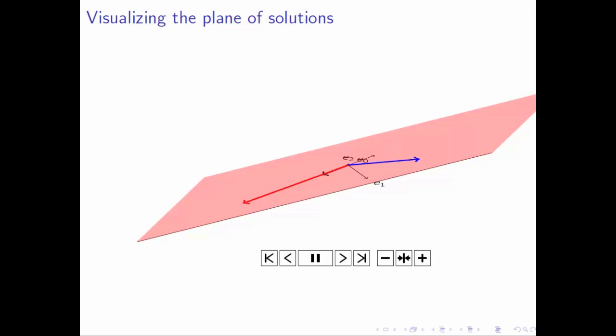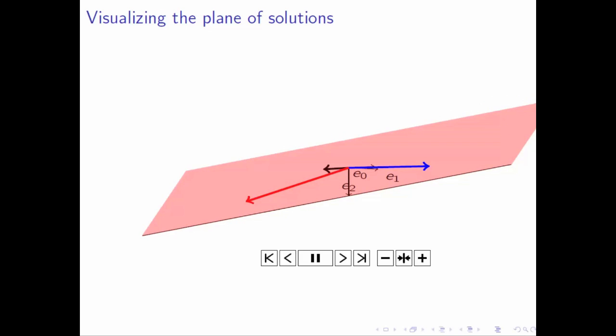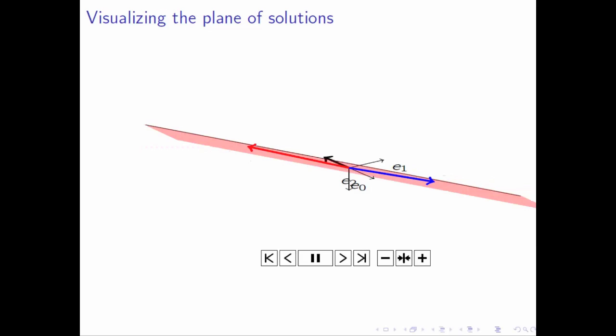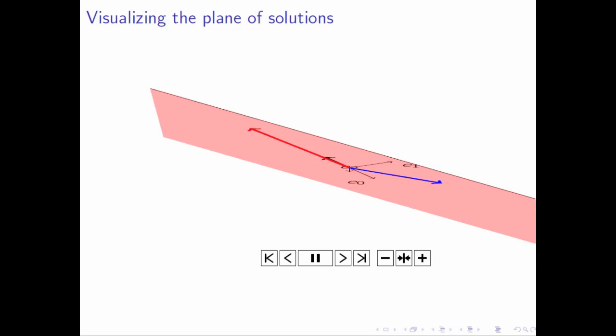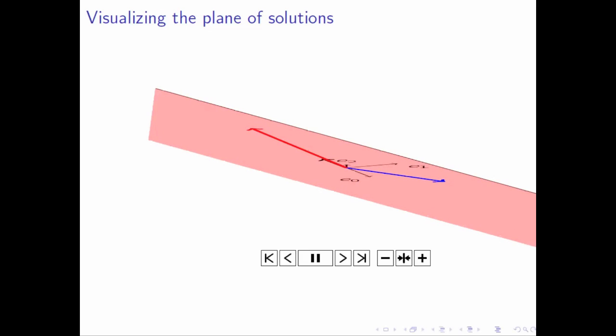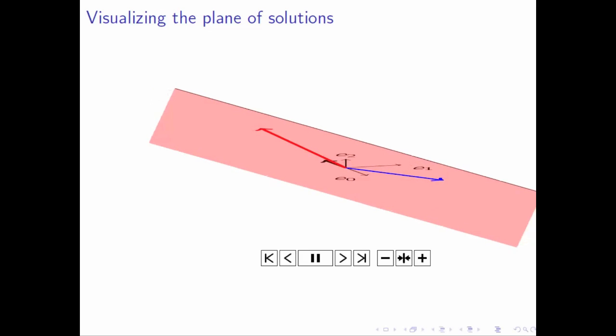And while clearly you can see that any vector in that subspace can be achieved by taking a linear combination of the red vector and the blue vector, somehow it is hard to visualize it. It's just not particularly pleasing.